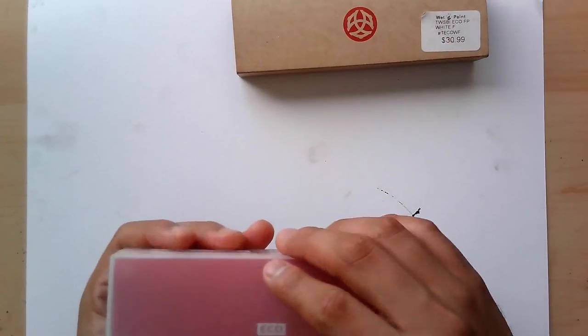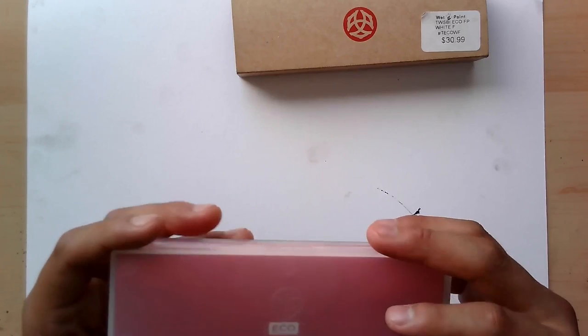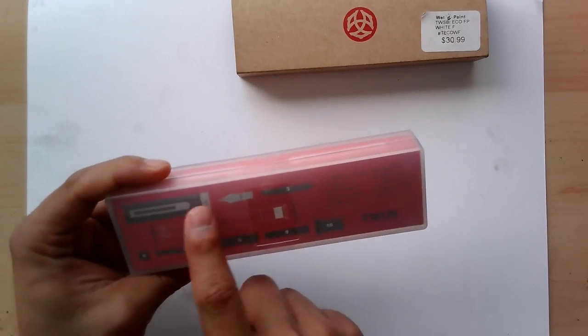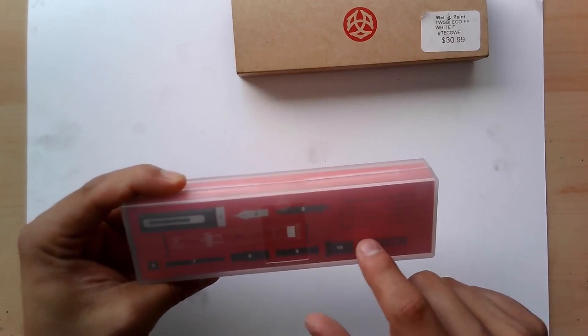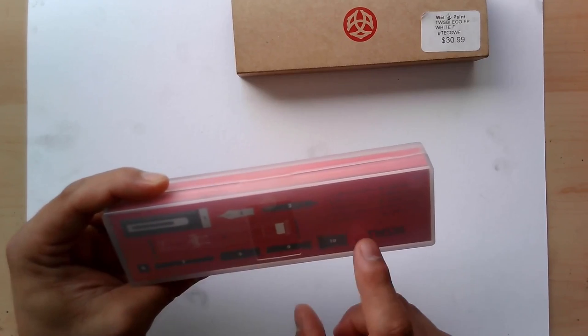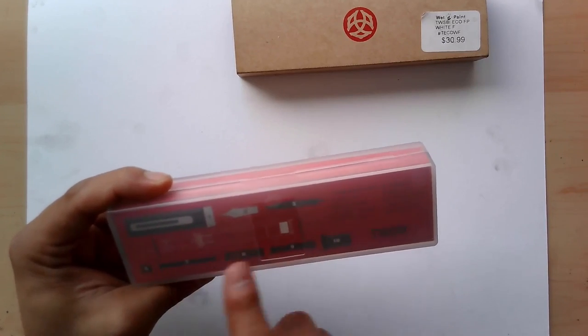So when you open the box here, it comes in this little silicone box. On the back of the box, it has all the parts labeled from 1 through 10. So if you ever have any question of how to put this all together or how does this all work, all the parts are down here.